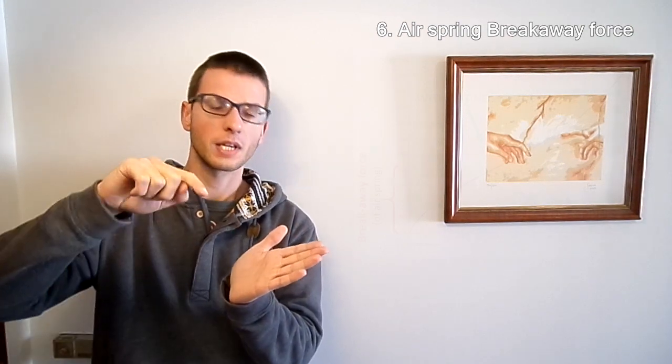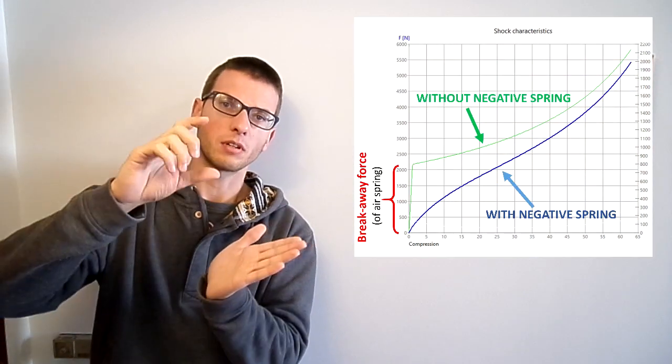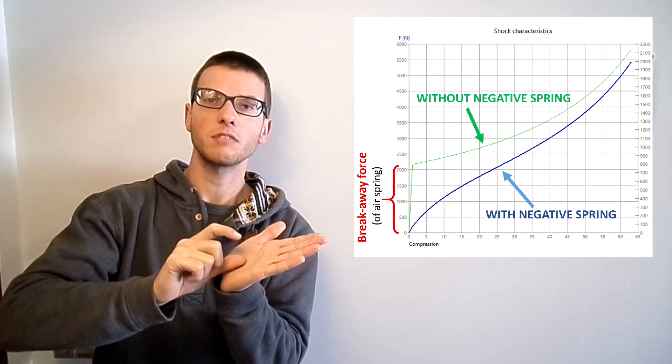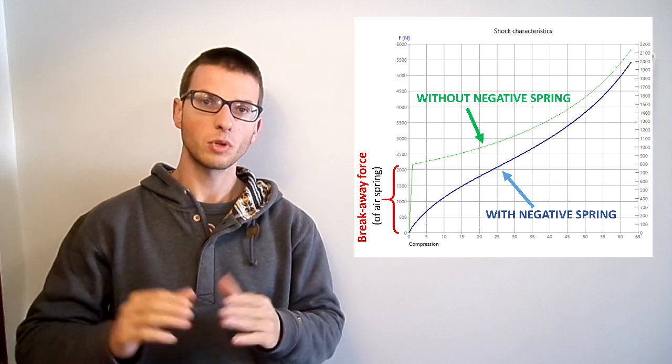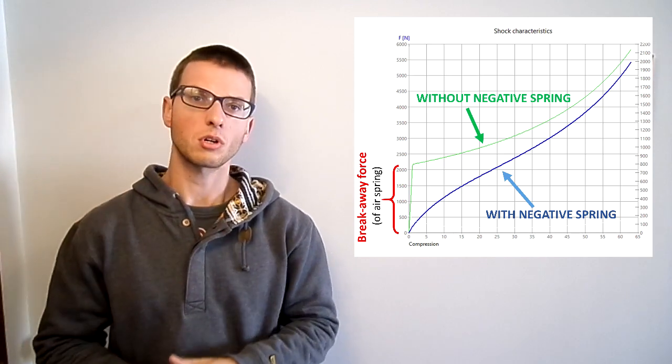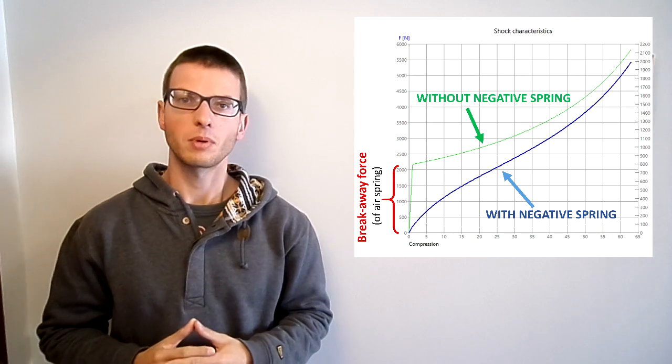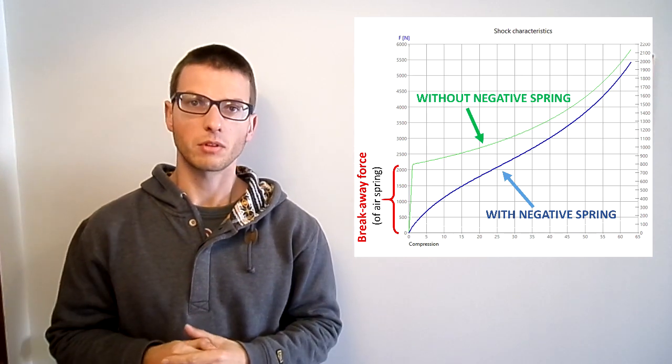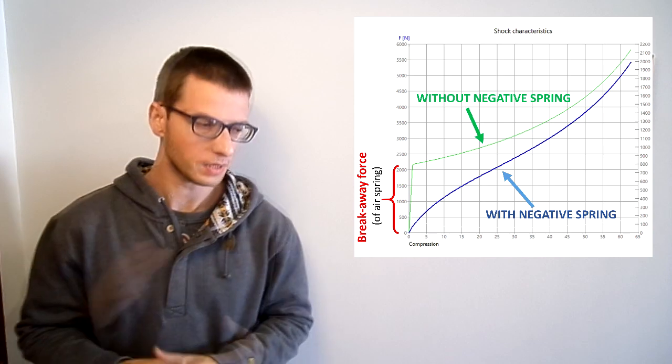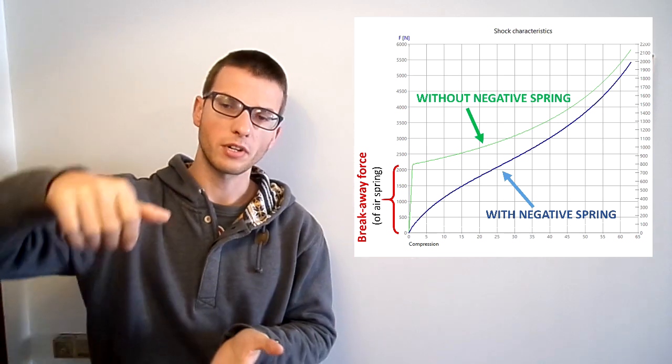By creating a negative air chamber in the air shocks and by equalizing the pressures between the main chamber and the negative chamber, you can indeed reduce the amount of preload of the shock and you can decrease the breakaway force to a very low amount of force. For coil shocks it is very easy, you just need to decrease the preload of the spring. And the spring when it is not preloaded, it does not produce any static force. So, you don't have to worry about negative air chambers and so on.